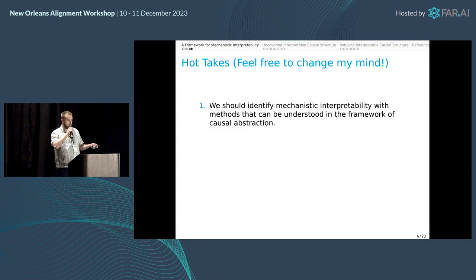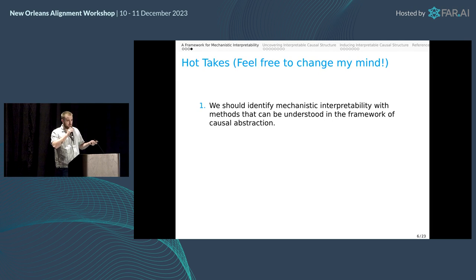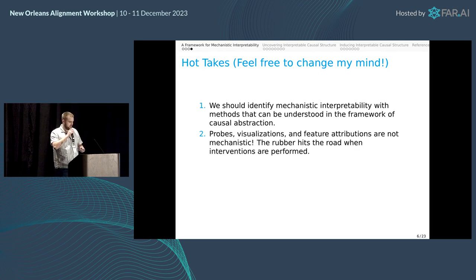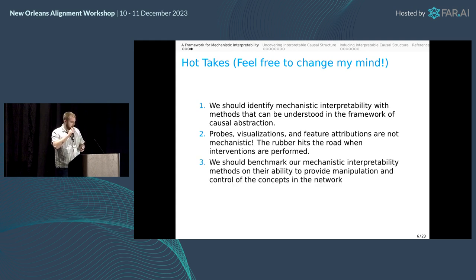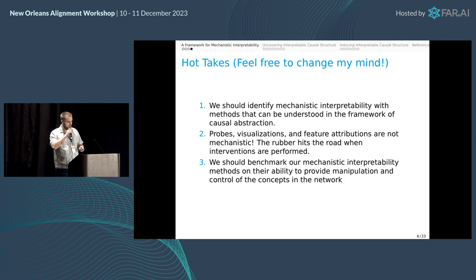Here are a couple of hot takes. I think mechanistic interpretability as a whole — everything in it — can be understood within the framework of causal abstraction. Probes, visualizations, and certain types of feature attributions are not really going to identify the mechanisms we're looking for. We really need to develop benchmarks so we can start hill climbing and understanding what success looks like in mechanistic interpretability.